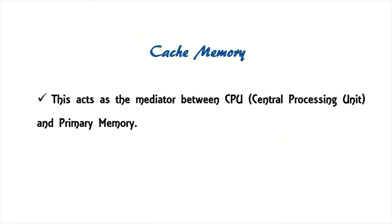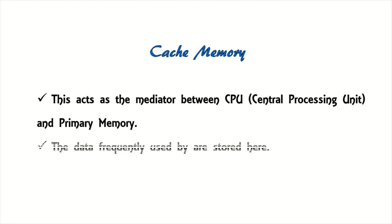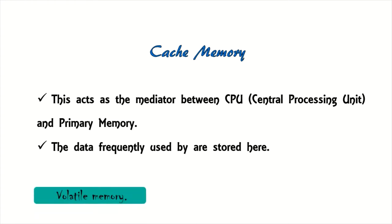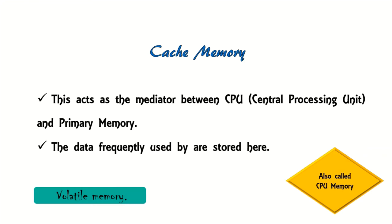Cache Memory acts as the mediator between the CPU (central processing unit) and primary memory. The data frequently used by the CPU is stored here. Cache Memory is Volatile Memory and is also called CPU Memory.